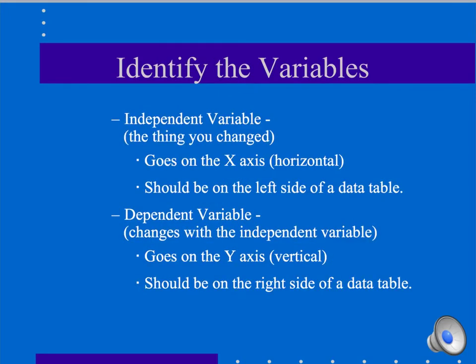Once again, in order to make that graph, the independent variable is the thing you changed as the scientist. It's going on the x axis. The dependent variable, remember D and D dependent data, is going to go on the y axis. So this is your horizontal. This is your vertical.